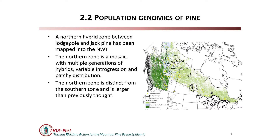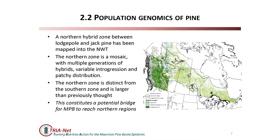Putting that back on the map, every dot here is a population that Ian typed. The light green area is the predicted range of jack pine and the dark green is the predicted range of lodgepole, and the interesting bits are the hybrid zones. In fact there are two hybrid zones: a northern zone in northern BC and Alberta extending into the Northwest Territories, and a southern zone in central Alberta which we're quite familiar with. Ian characterizes the northern zone - it's a mosaic with a lot of back-crosses, old hybridization, multiple generations of hybrids, variable degrees of introgression, and a fairly patchy spatial distribution.